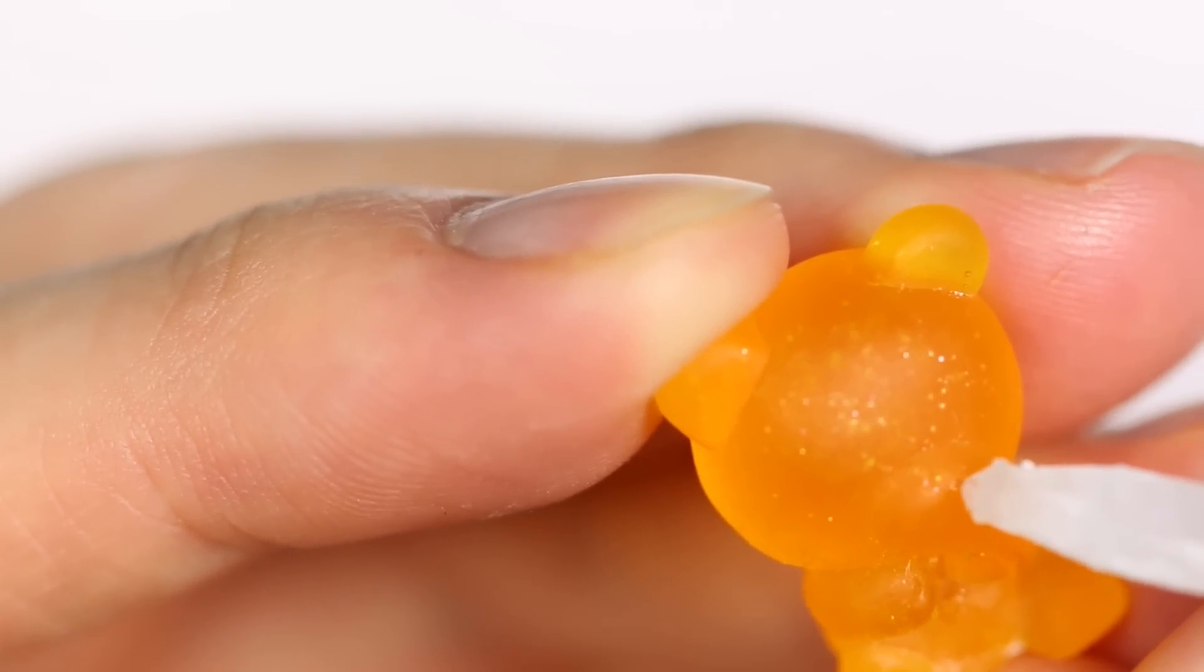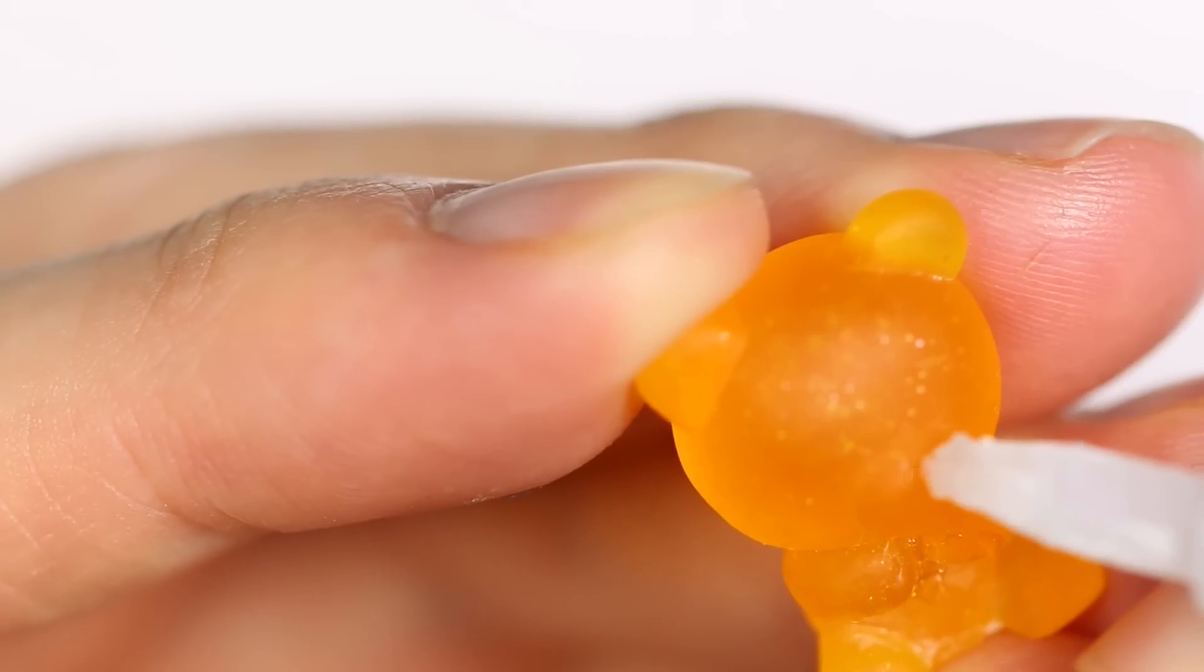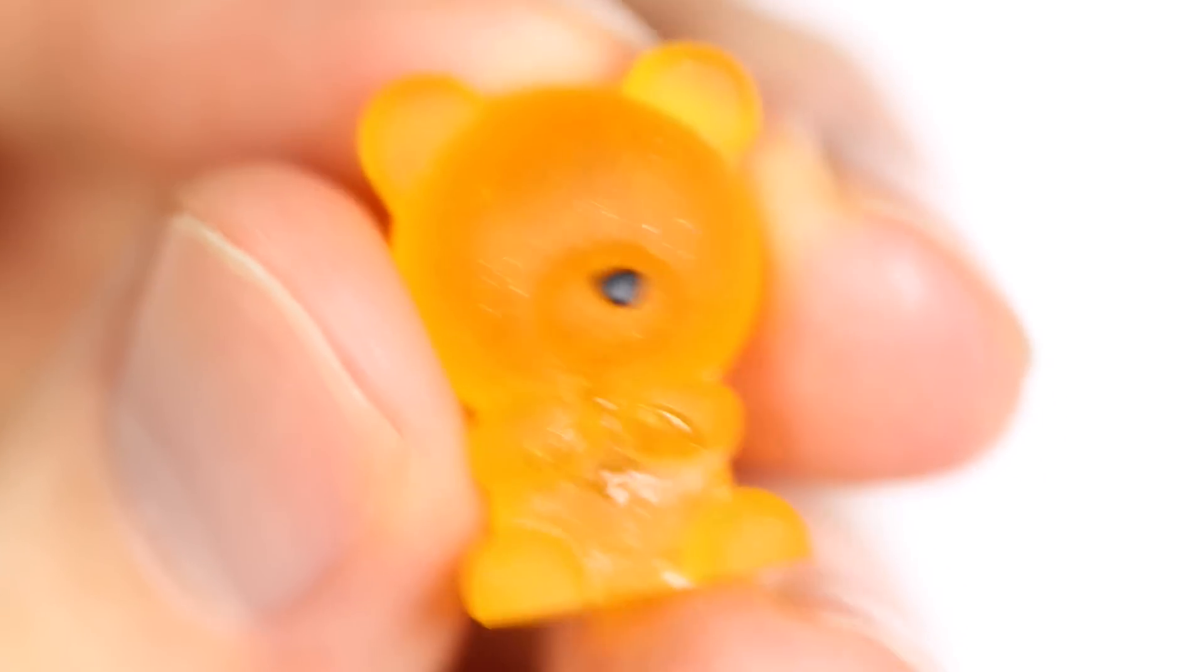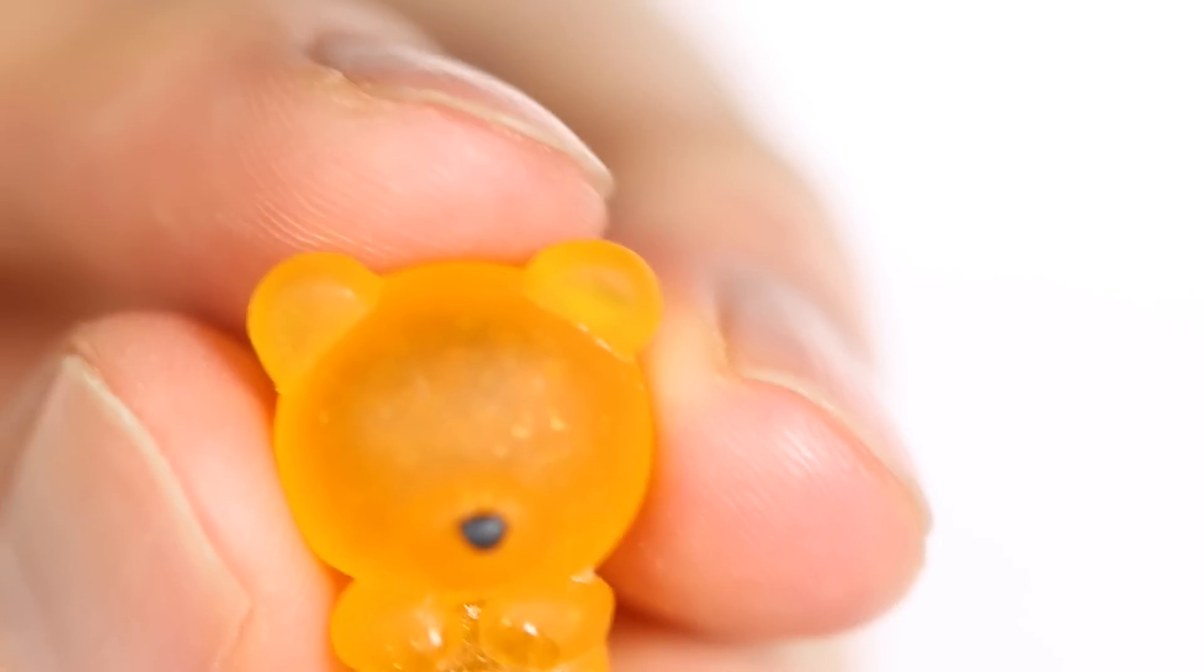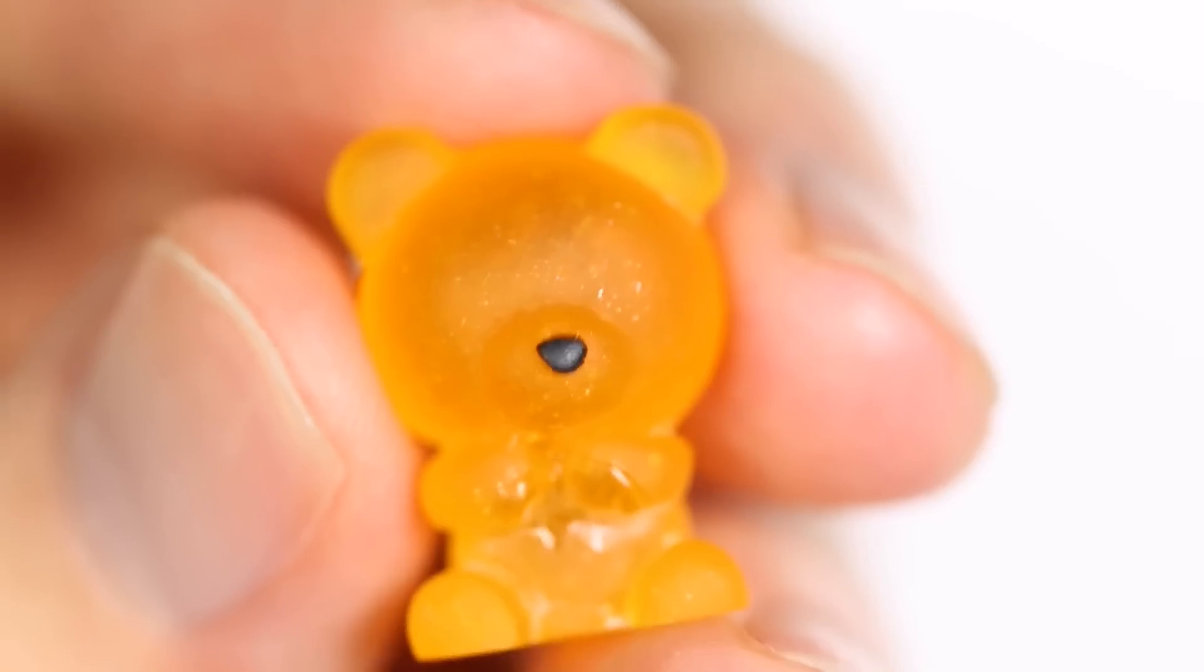Next, I'm going to put some super glue on the nose and the eyes to add in the little polymer clay accents that I have previously baked. And if you did not do this step, you can always take black paint and paint on the eyes and nose as well.